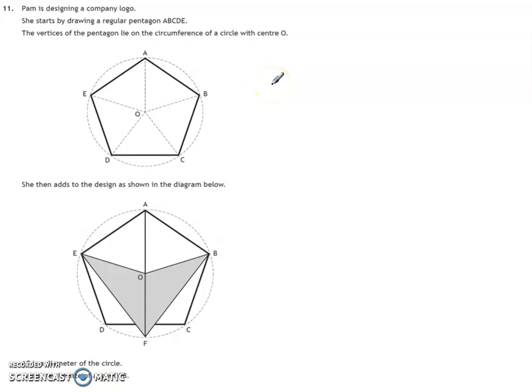In this question, the key thing it looks at and the key topic it hits on is all to do with circle properties, lines, tangents, diameters, and anything associated like that.